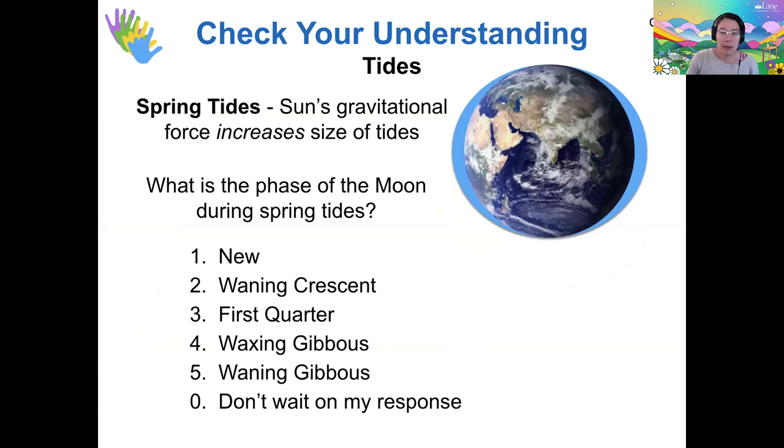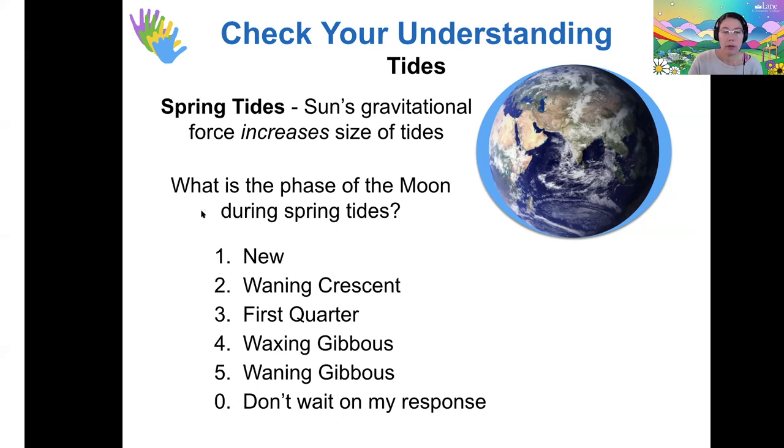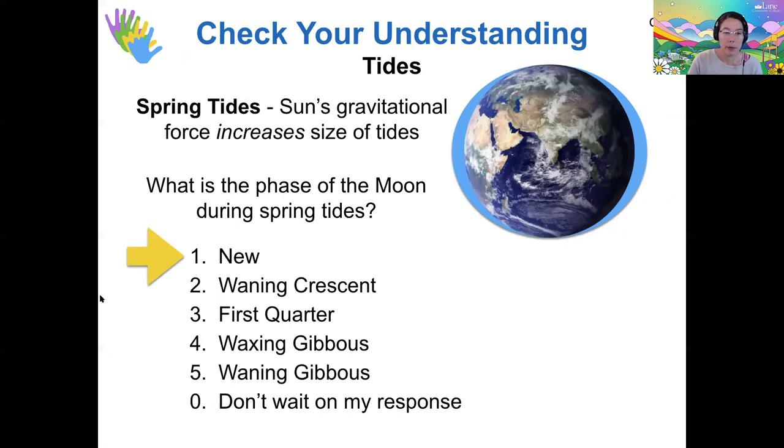Okay, so a question for you. Based on the alignment that is required to produce a spring tide, what phase could produce a spring tide? I see the most votes for one, the new moon. That's exactly right. So when the new moon was the one I showed you on the last image, the moon is between the sun and the Earth.